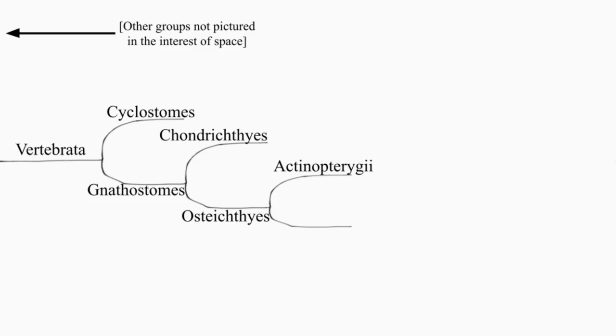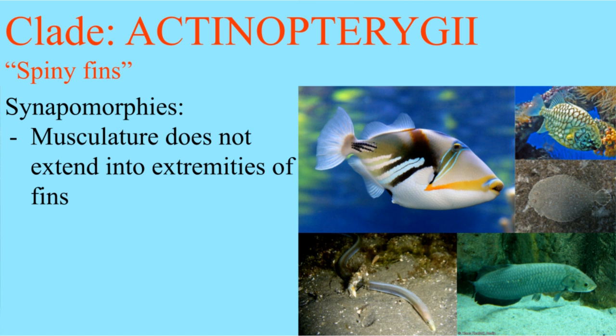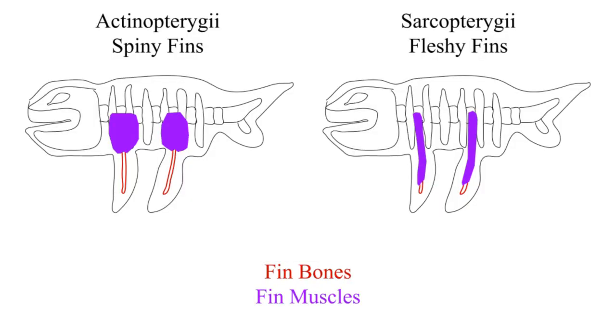Osteichthyes divides into spiny fins and fleshy fins. Actinopterygii are the most diverse clade of vertebrates containing the major group known as teleost fish. The two are separated by whether the muscles controlling the fins actually extend down into the fins, hence the names.